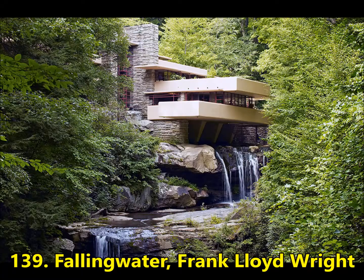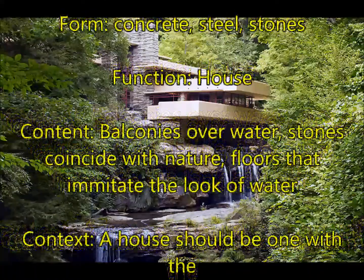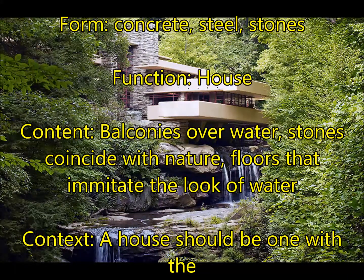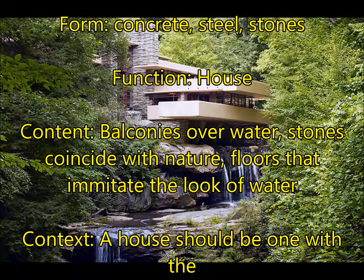Next, we're going to have Fallingwater by Frank Lloyd Wright — by far the most famous architect in the 250. For form, this is made of concrete, steel, and stones. For function, it is a house. For content, you have several balconies which jut over the water and coincide with the river. It has stones taken from or inspired by nature all around the house, and floors that imitate the look of the water and the natural stone.